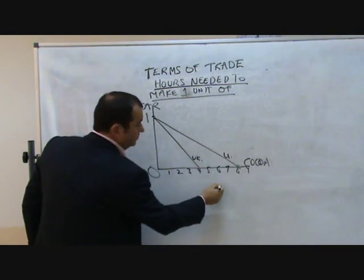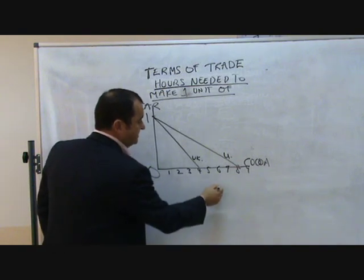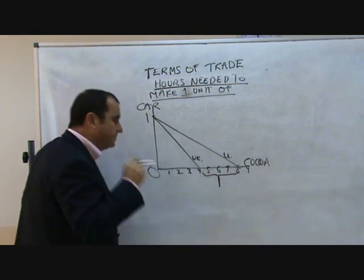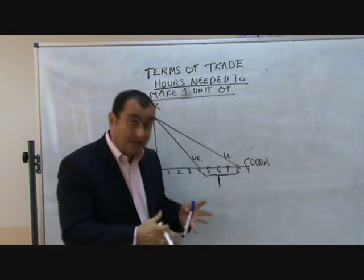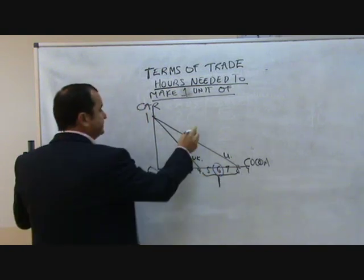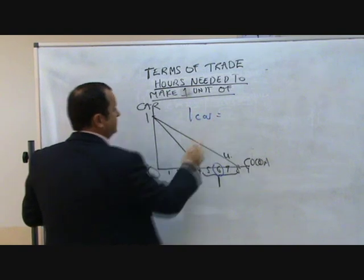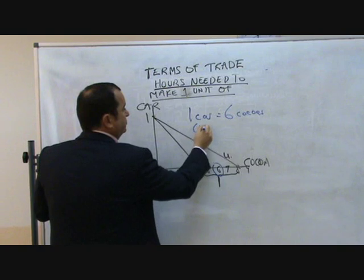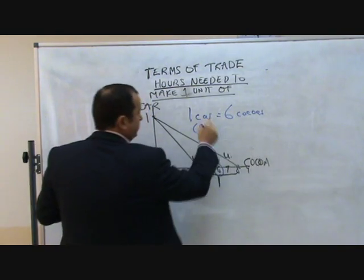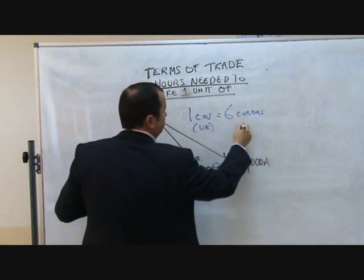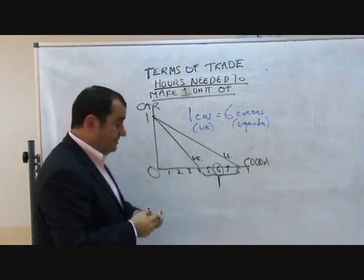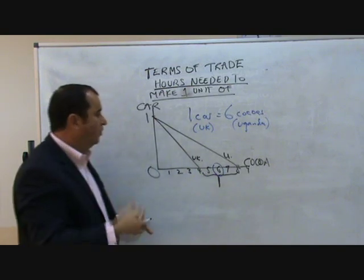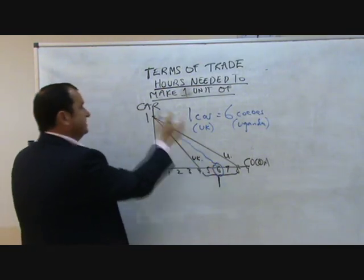The terms of trade suggest that trade will only take place if the terms of trade lie within this range — between the two opportunity cost ratios. Let's imagine the UK, because it has comparative advantage in car production, is making cars and trading with Uganda for cocoa. The price finally settled on is that one car will equal the same price as six units of cocoa. The relative price of cars and cocoa must lie in this range.